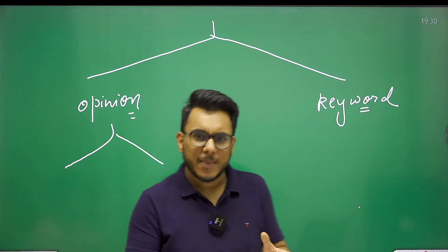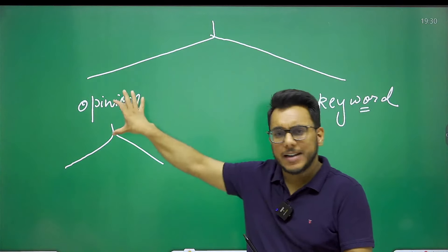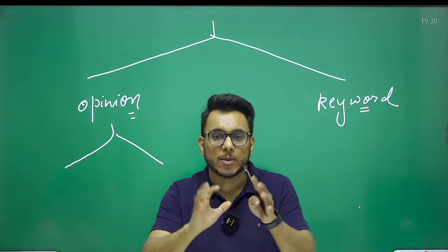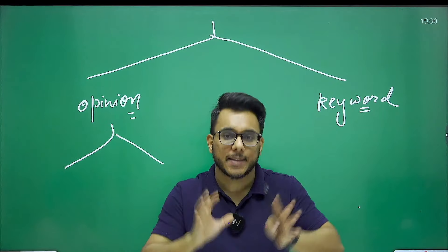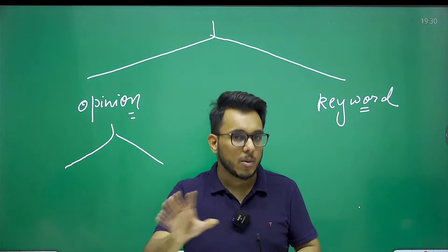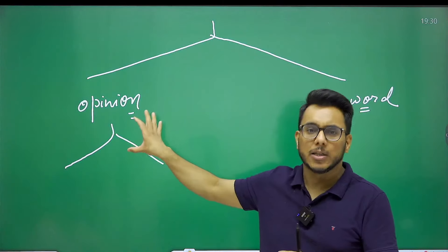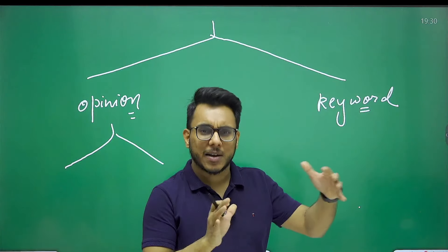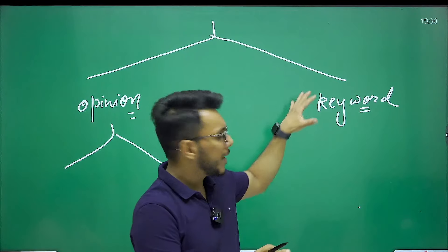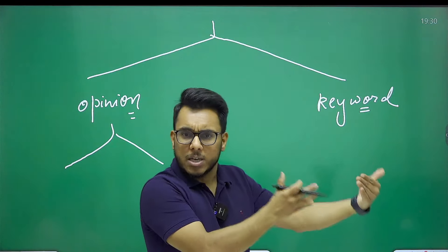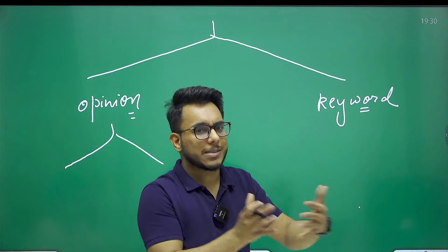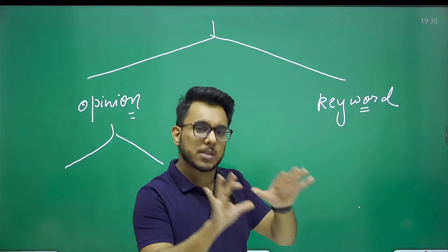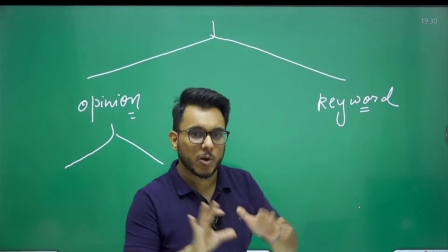Quotation-based questions can also be classified under opinionated only, because they give you a quotation and ask your views on it or what you mean by it in the present time. Questions are also being asked on governance, crisis of governance, RTE, etc. That is also keyword-based because unit 6 and unit 7 broadly talk about administrative ethics. So broadly we have two types of questions: opinion-based and keyword-based.